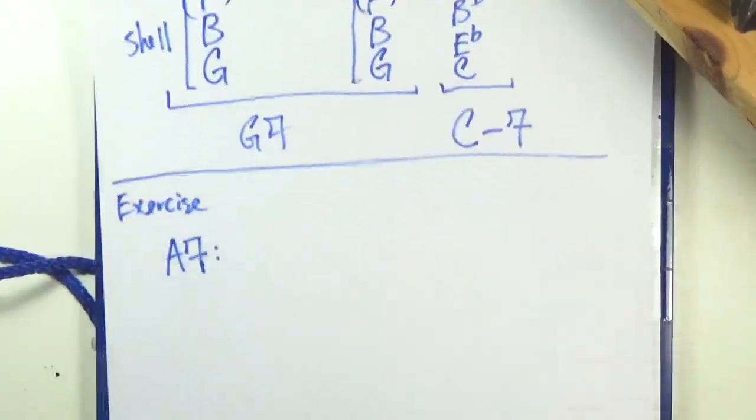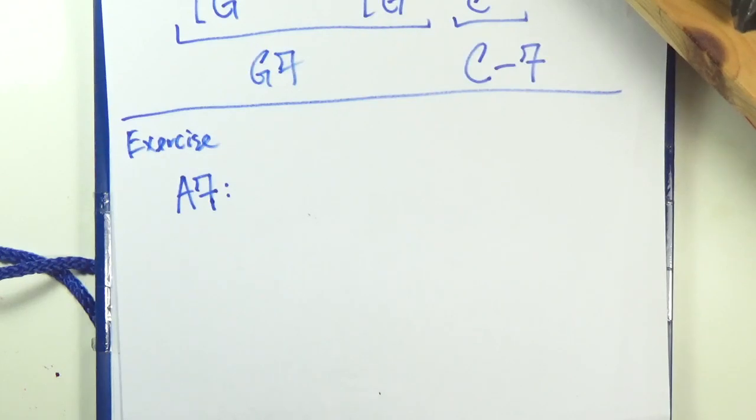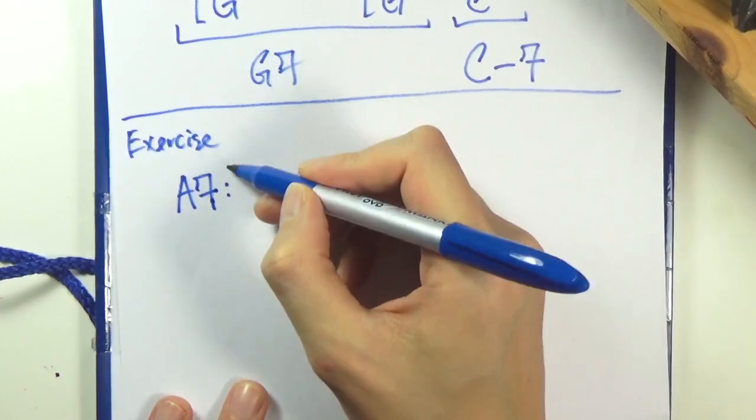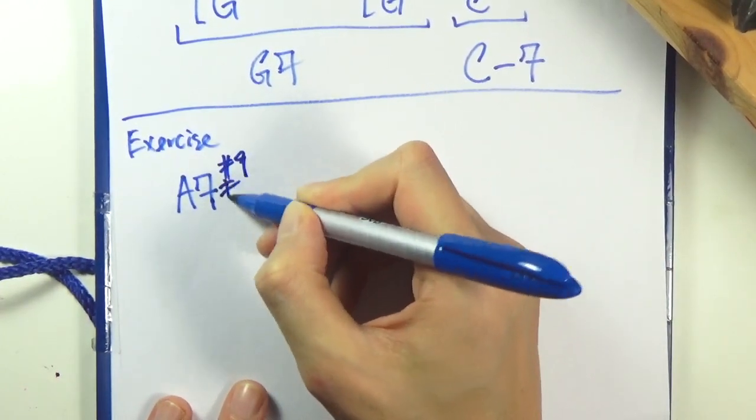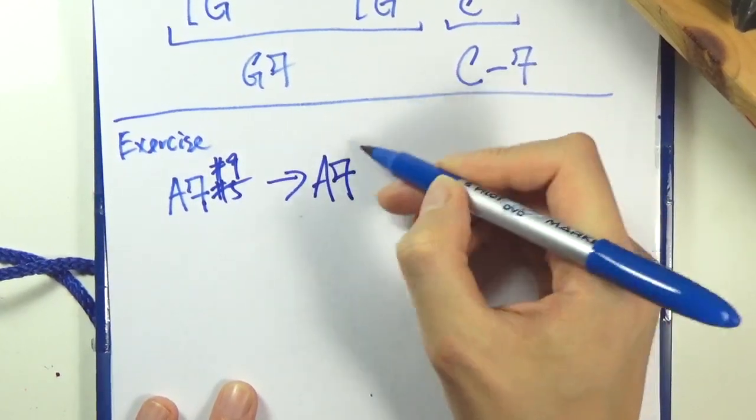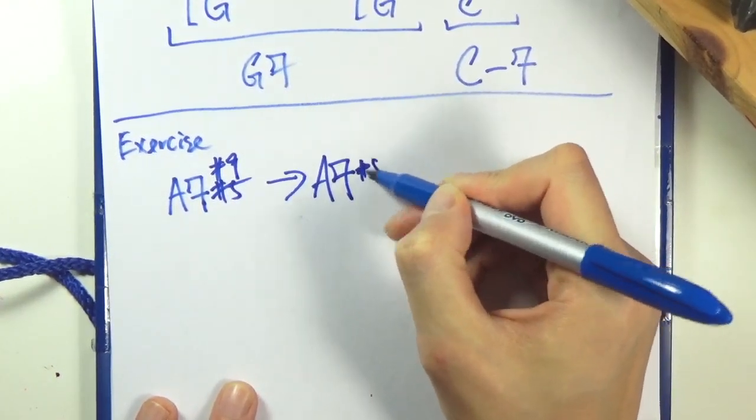Let's work out an example on our own. Let's start with A dominant 7. We can add the tensions sharp 9 sharp 5, and then you can go to A7 keeping the sharp 5.